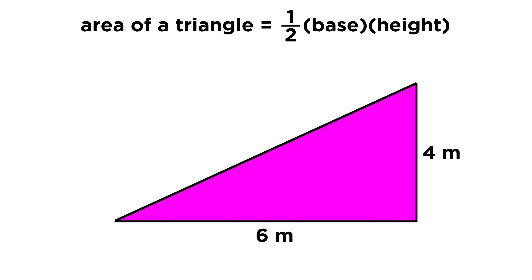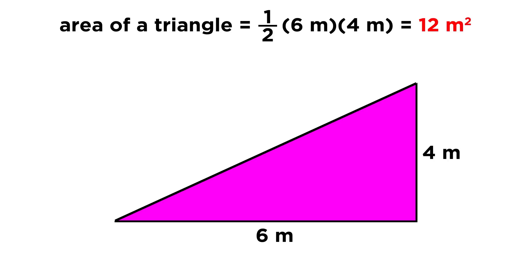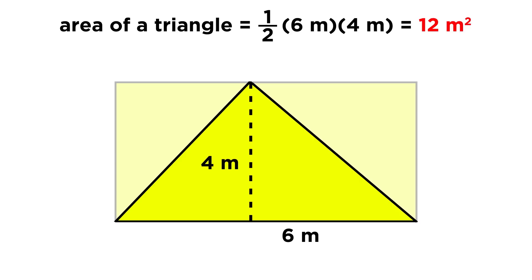So this triangle, with a base of six meters and a height of four meters, will have an area of twelve square meters. This works whether the triangle is a right triangle or not. Even though it's a little harder to see how this triangle is half of this rectangle, because it splits the rectangle up into more than two pieces, we can still use one half base times height.